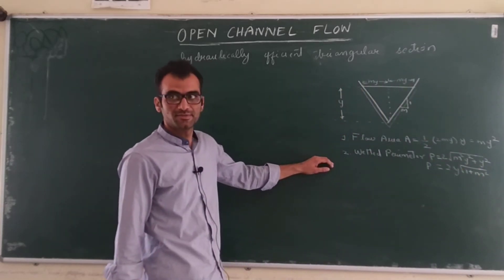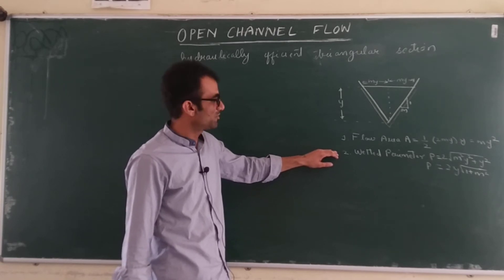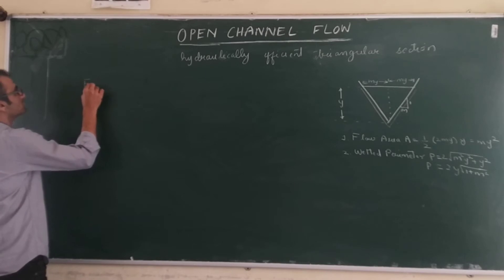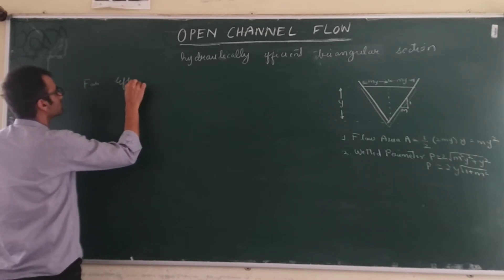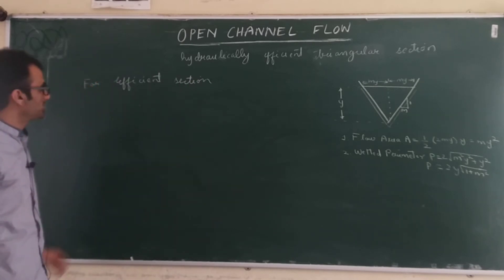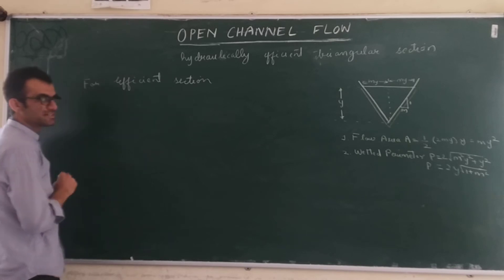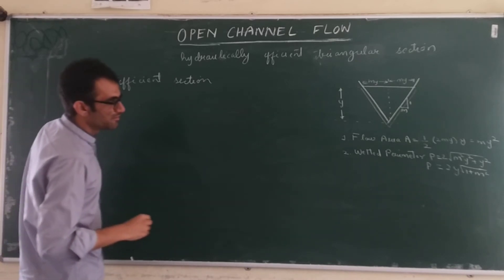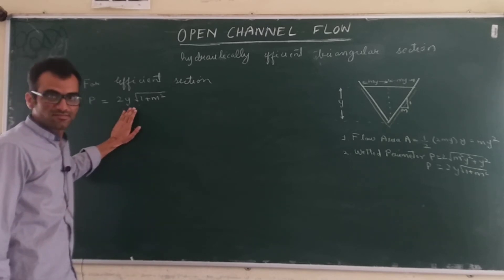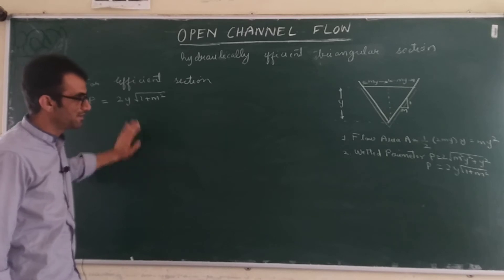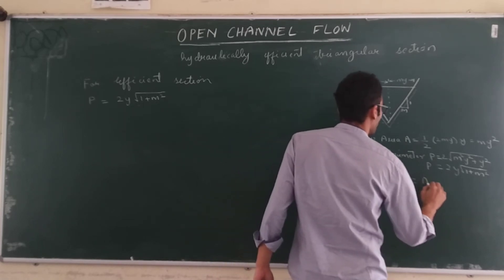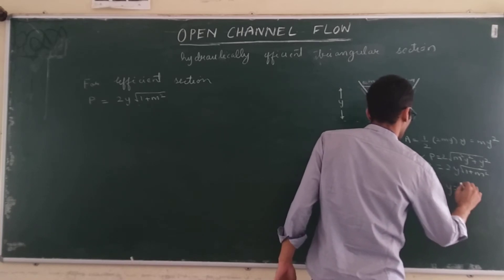These are the flow area and wetted perimeter. Now, to find the conditions for the efficient section, we need to minimize the wetted perimeter. We will write the formula for wetted perimeter as P = 2Y√(1 + M²), and replace Y using A = MY², so Y = √(A/M). Substituting, the perimeter becomes P = 2√(A/M) · √(1 + M²).